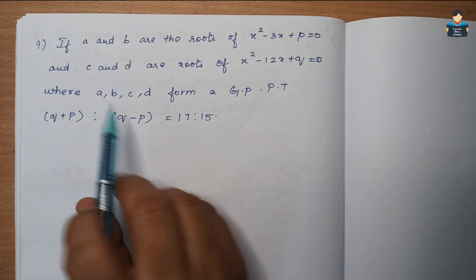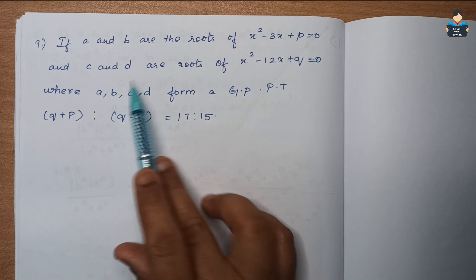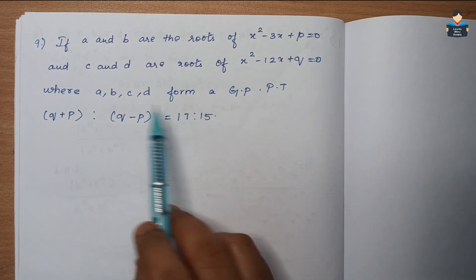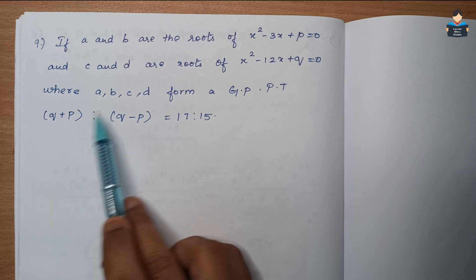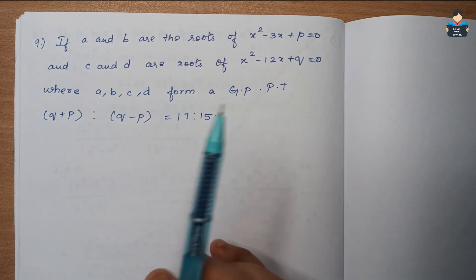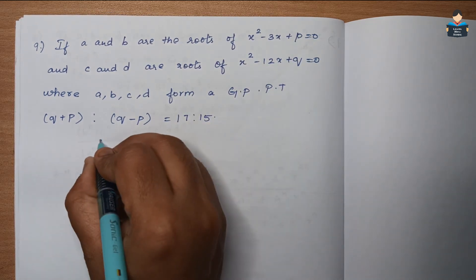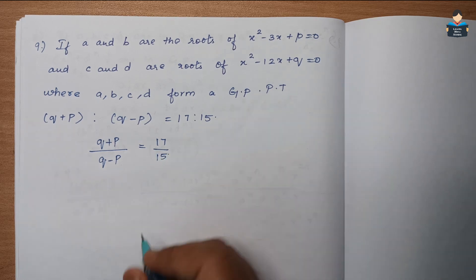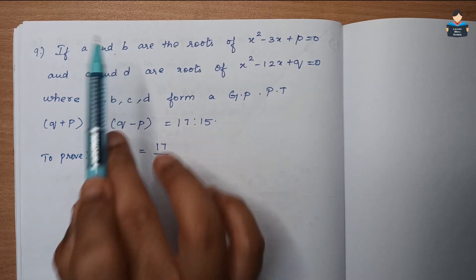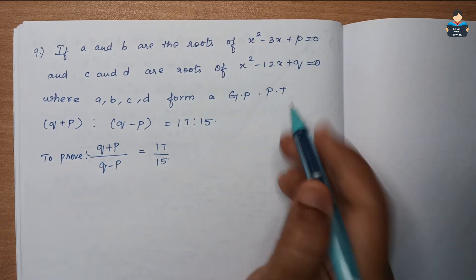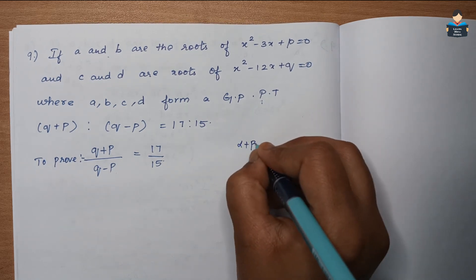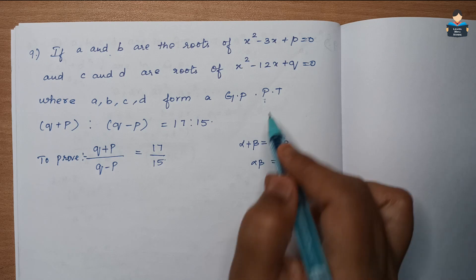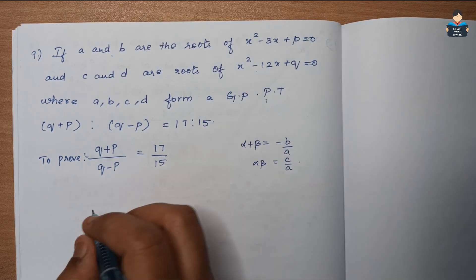So a and b are the roots of the first equation, and c and d are the roots of the second equation, where a, b, c, d form a GP. We will use the sum and product of roots formula: sum of zeros = -b/a and product of zeros = c/a.